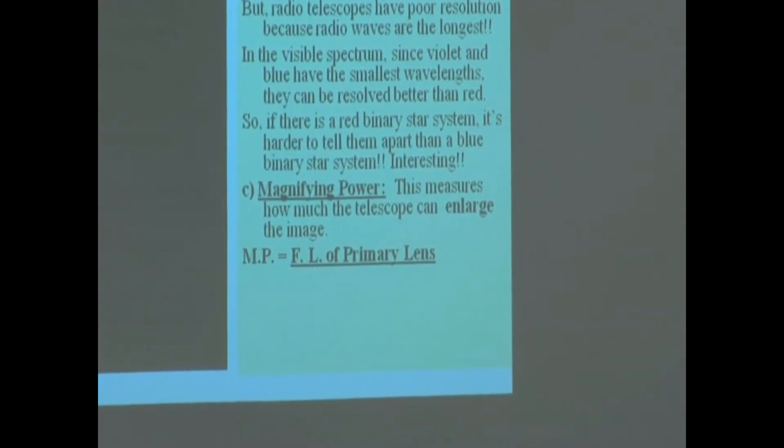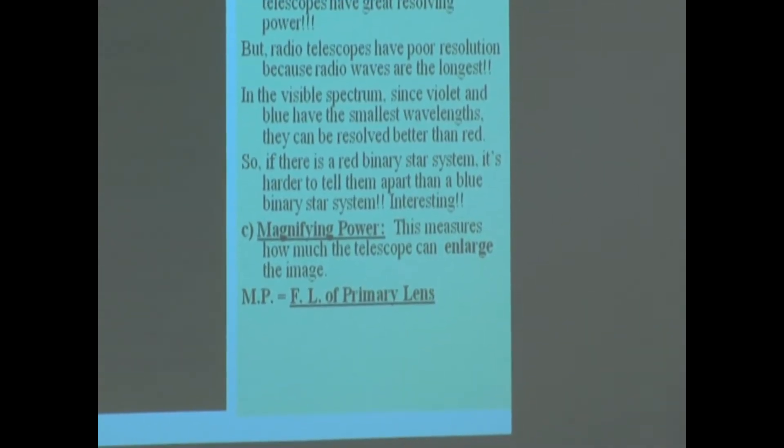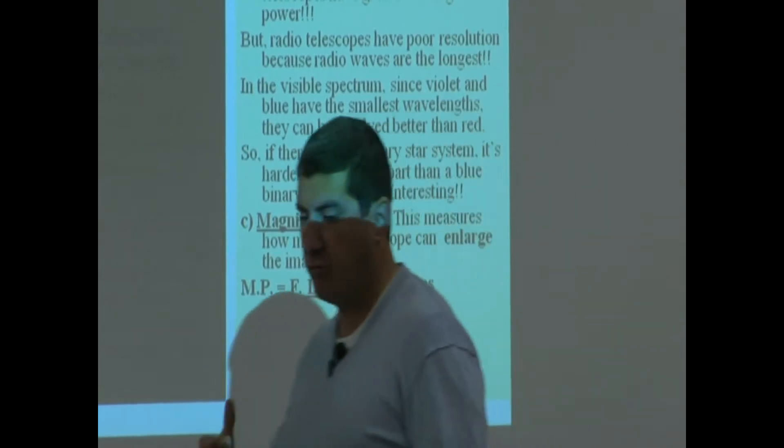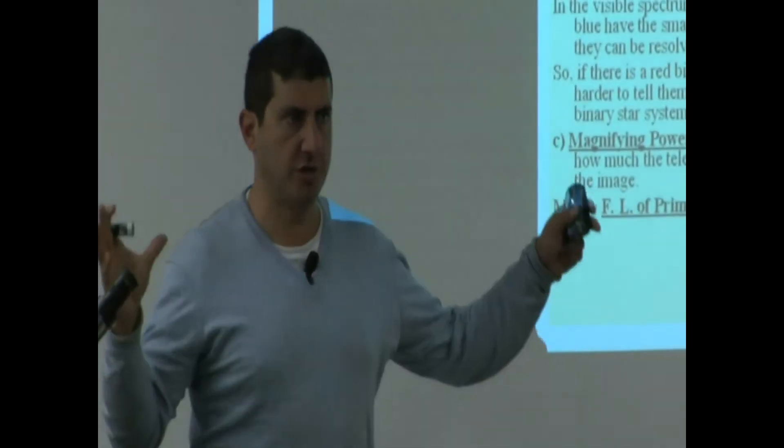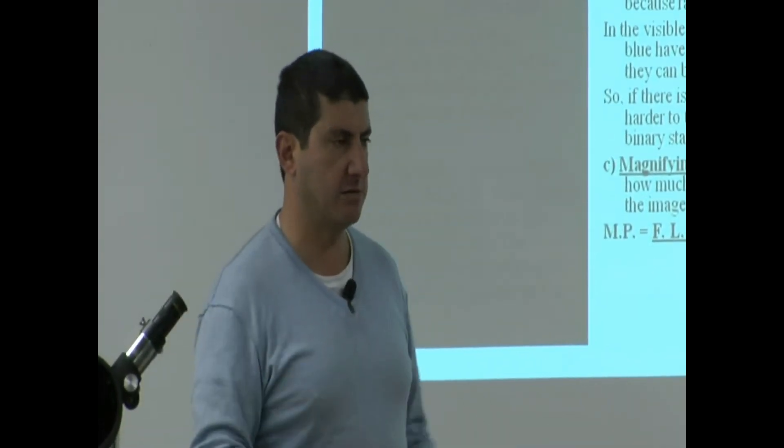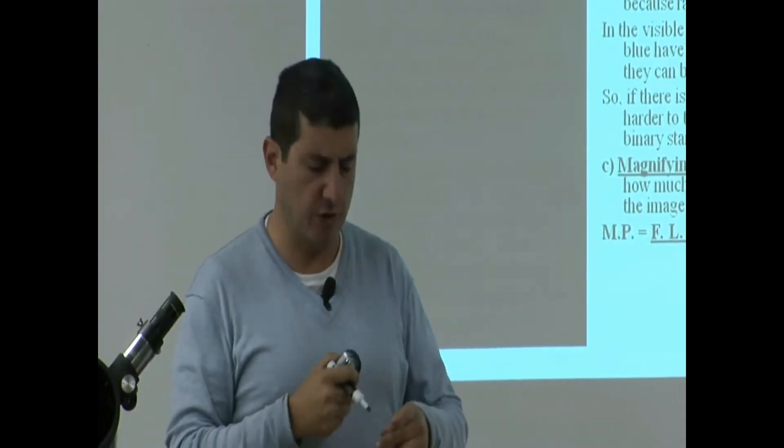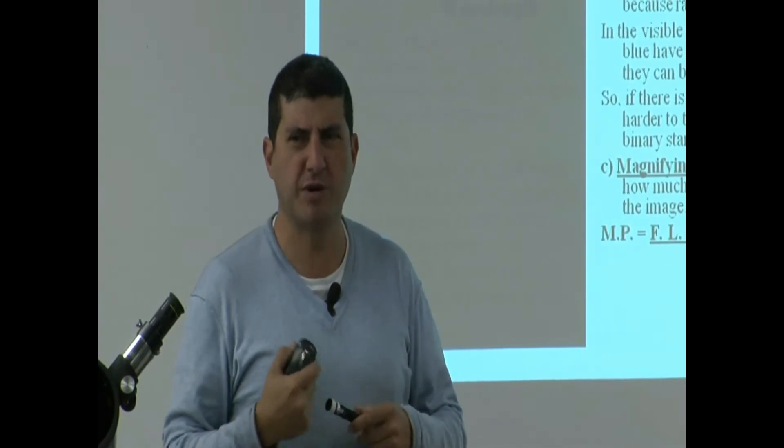And this is called magnifying power, magnifying power. This means how much the telescope can magnify or enlarge the image, how big it can make it. Usually with telescopes, we want them to enlarge the image, but not too much.